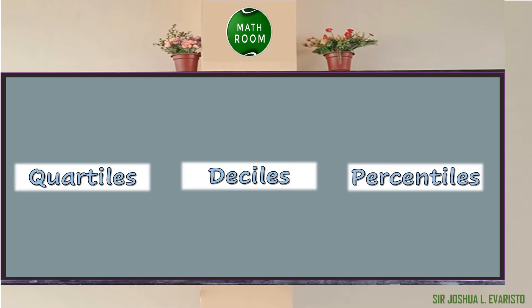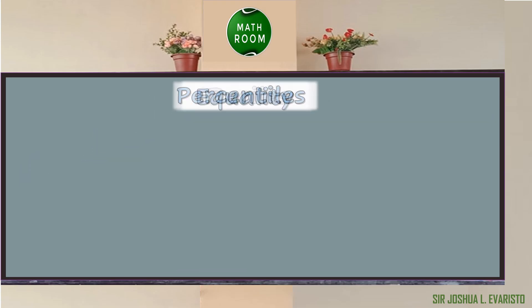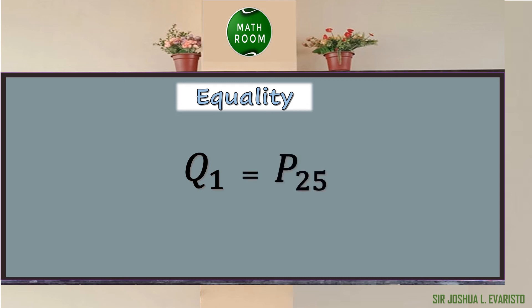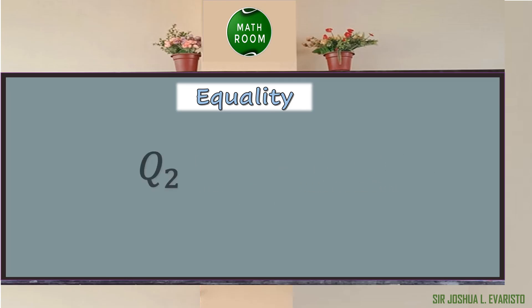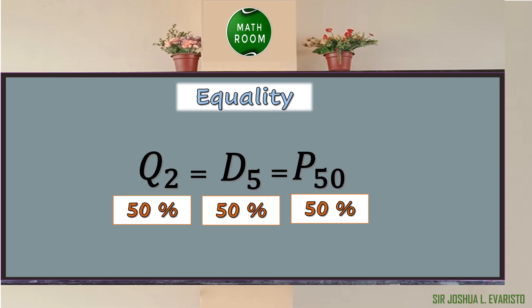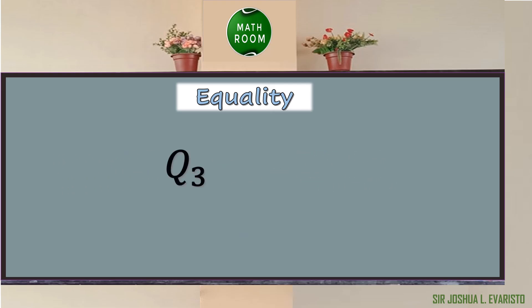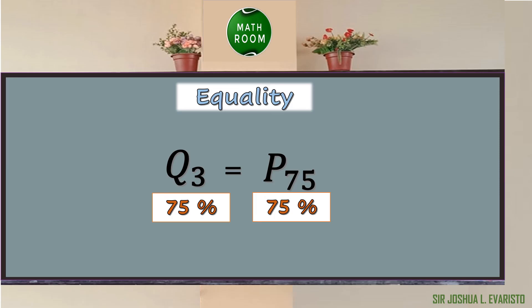Based on the information we gained about quartiles, deciles, and percentiles, we can infer the following equalities. Number 1: Q sub 1 is equal to the 25th percentile, since Q sub 1 equals 25% and P sub 25 equals 25%. Number 2: Q sub 2 is equal to D sub 5 is equal to P sub 50, since they are all equal to 50%. Number 3: Q sub 3 is equal to P sub 75, since Q sub 3 equals 75% and P sub 75 also equals 75%.